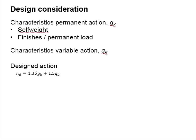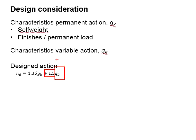When calculating the permanent actions, it will be the combination of the self-weight of the staircase plus the finishes and any permanent loads acting on the staircase. For the characteristic variable actions, you may refer to Eurocode 1 for a suitable value to adopt in the design. When designing for the ultimate limit state, the permanent load GK is multiplied by a factor of safety of 1.35, and the variable load QK is multiplied by a factor of safety of 1.5.